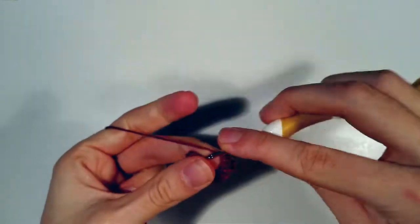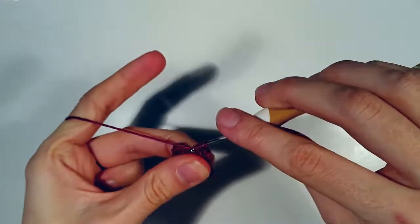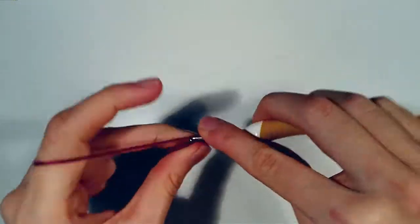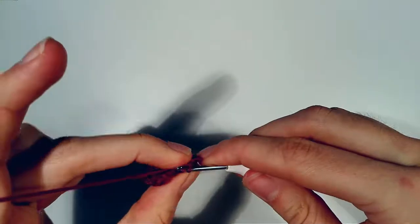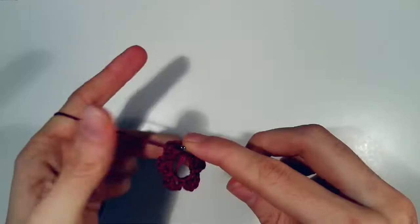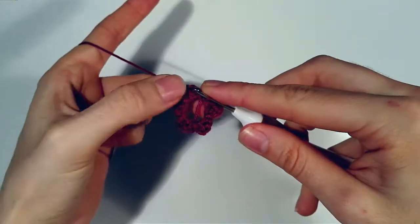Chain one, chain two, double crochet, chain one, chain two, slip stitch. And we have our five petals.